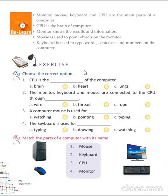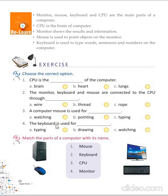Now, let's come to the exercise. Come to A. In this, you have to choose the correct option. CPU is the brain of the computer. The monitor, keyboard, and mouse are all connected to the CPU through wire. A computer mouse is used for pointing. The keyboard is used for typing.